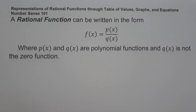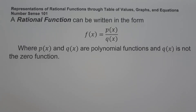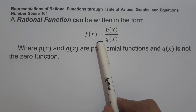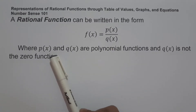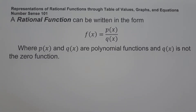For today's video, we are going to talk about how to represent rational functions through table of values, graphs, and equations, and we are going to explain everything in detail. So let us define first what is a rational function. A rational function is written in the form f(x) = p(x) over q(x), where p(x) and q(x) are polynomial functions and q(x) is not equal to zero. One of the important things in graphing a rational function is to know how to identify the domain of the given function, including the line of asymptotes.